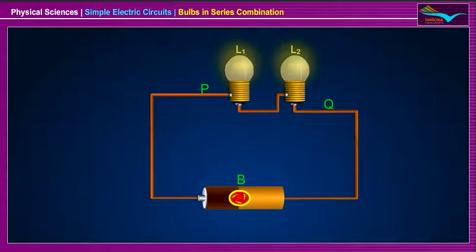Since each bulb contains two terminals 1 and 2, the series connection is made by connecting terminal 2 of first bulb L1 to the terminal 1 of the second bulb L2. The terminal 1 of first bulb and terminal 2 of second bulb in the PQ portion of the circuit are connected to positive and negative terminals of the battery cell B respectively.